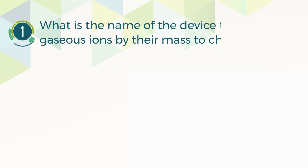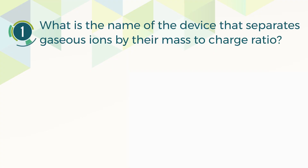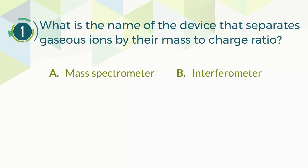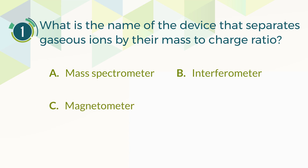Number 1. What is the name of the device that separates gaseous ions by their mass-to-charge ratio? A. Mass spectrometer. B. Interferometer. C. Magnetometer. D. Capacitance meter.